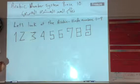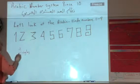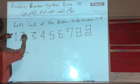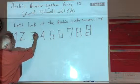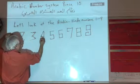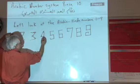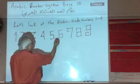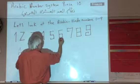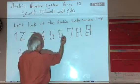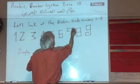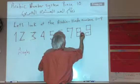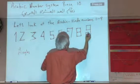They were formed based on angles. Let's see: number one has one angle, number two has two angles, three has one, two, three, number four has one, two, three, four, number five has one, two, three, four, five, number six has one, two, three, four, five, six. Number seven has one, two, three, number eight has one, two, three, four, five, six, seven, eight, number nine has one, two, three, four, five, six, seven, eight, nine.